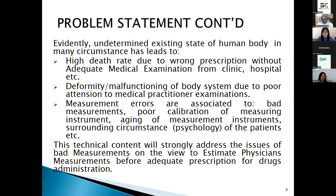The problem statement: the dominant existing state of the human body in many circumstances may have led to a high death rate due to wrong precision without adequate medical examination from clinic or hospital. Deformity and malfunctioning of the body system due to poor attention to medical procedure can also be a problem. For example, measurement errors are associated with bad measurement, poor calibration of measurement instruments, aging of instruments, and surrounding circumstances including the psychology of the patient. This technical content will address the issue of bad measurement to estimate physician measurement before adequate precision in drug administration.